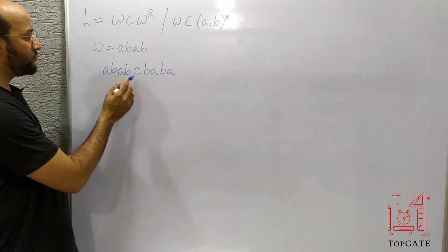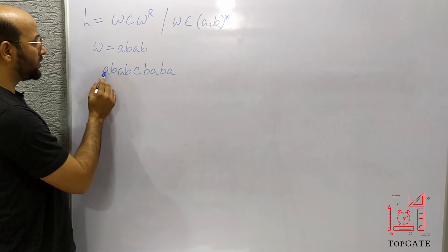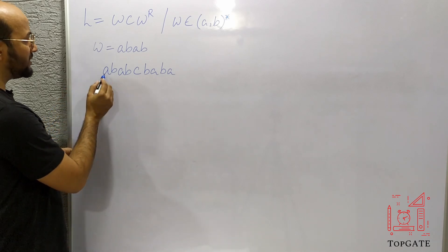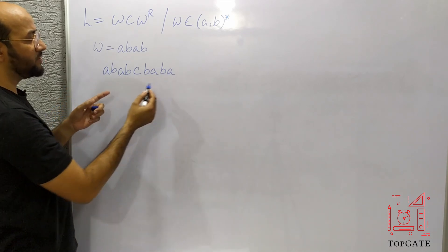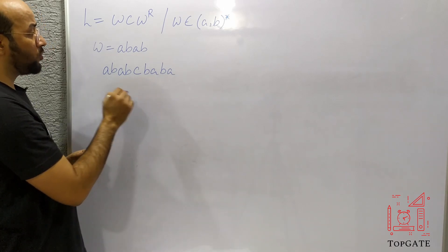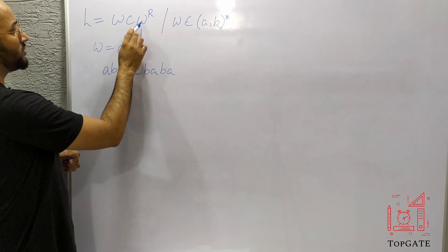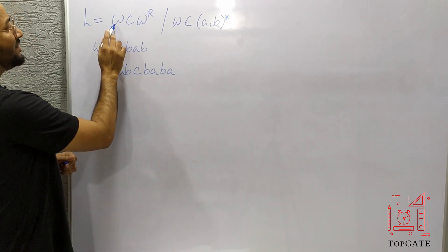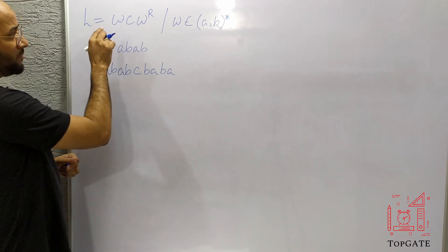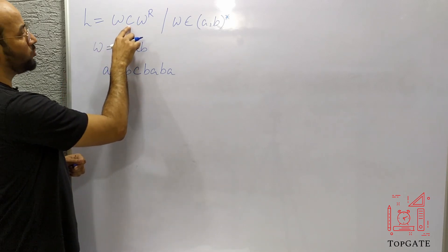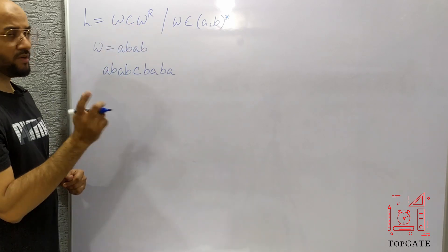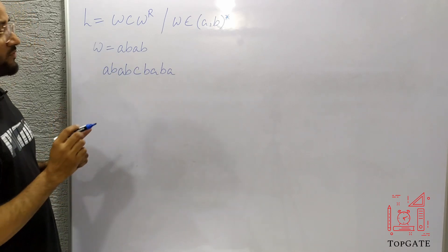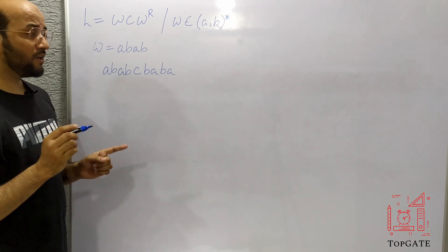If you count the length of this string it is 9. You can see that this is a palindrome — you can read it from either side and get the same thing. But the length of this palindrome is always odd. Why? Because we have W on one side and W^R on the other side, and there is one C in between. So odd+odd+1=odd, and even+even+1=odd. Every time we get an odd-length string, so it is also called the odd palindrome problem.